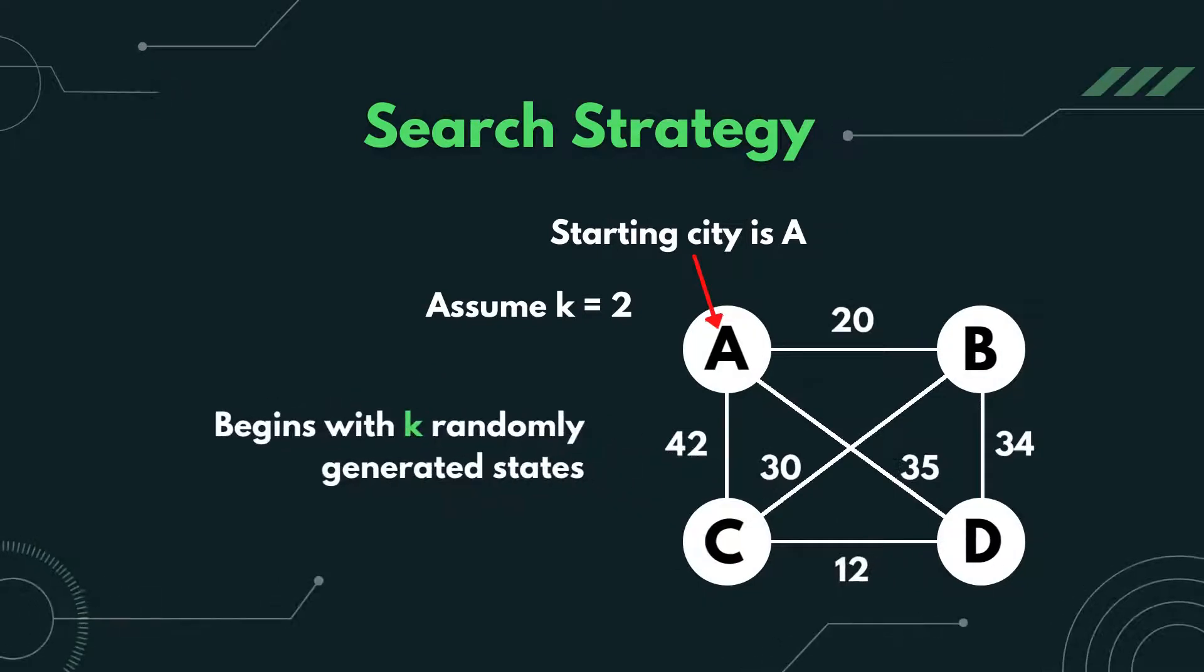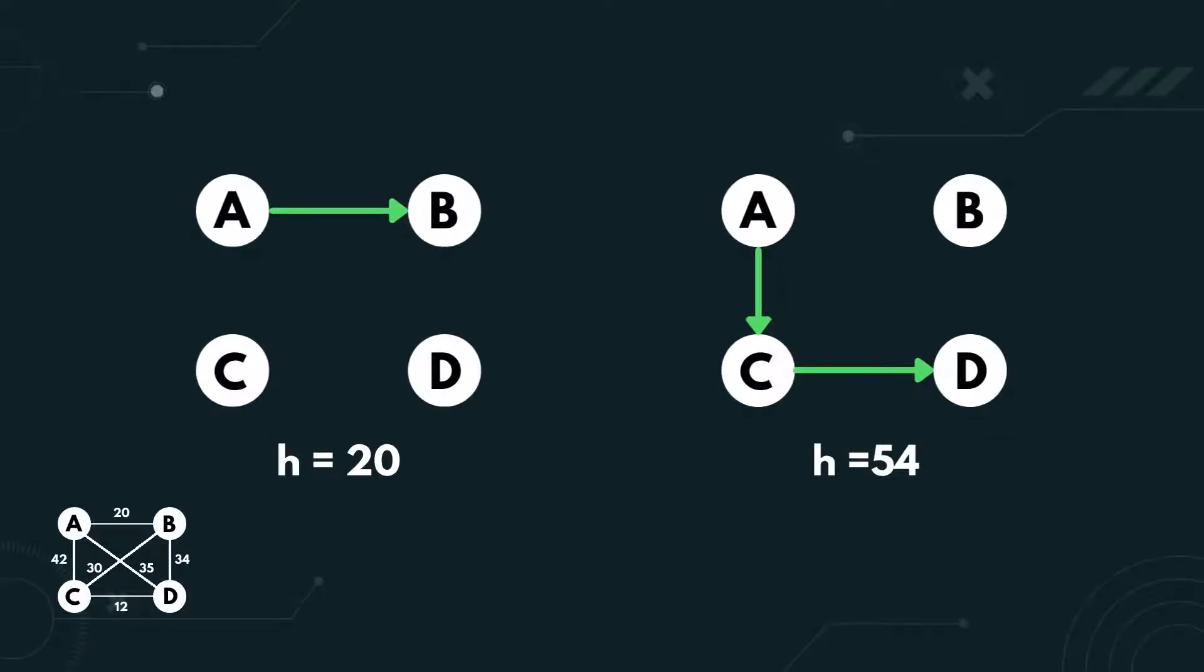The search strategy is that it begins with K randomly generated states. Let's assume the starting city is A and K is 2. So, we need to generate 2 random states.